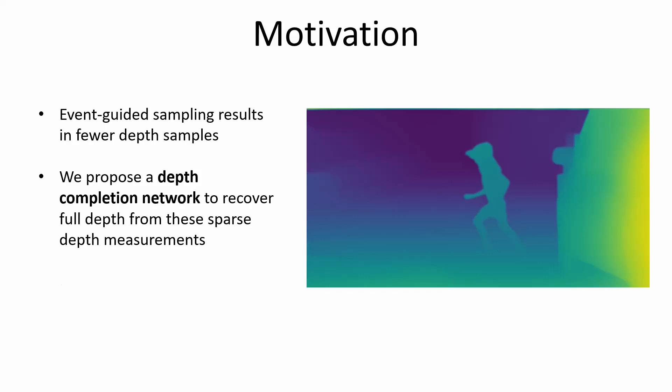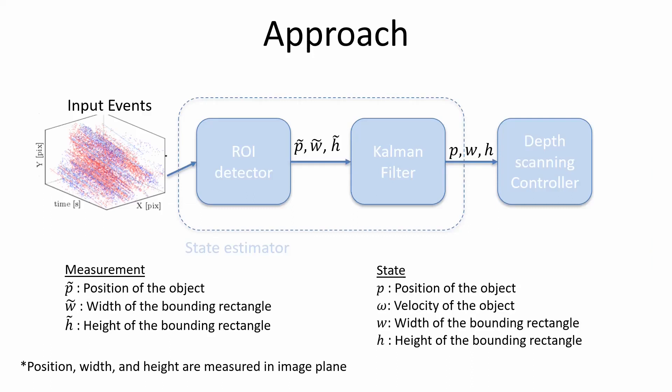We consider events since the last depth scan and detect the regions of interest. The regions of interest are the positions of the bounding boxes around the dynamic objects, along with their width and height. These measurements are then passed to a Kalman filter, which estimates the position of the bounding box in the image plane. This information is then passed to a scanning controller to control the depth samples.